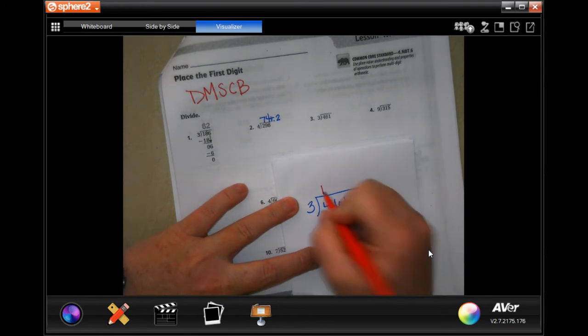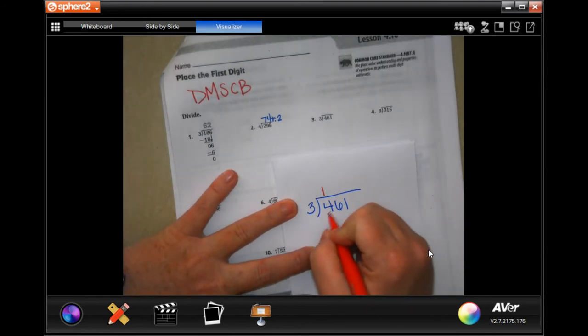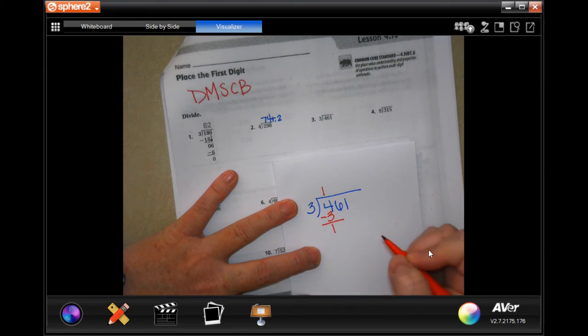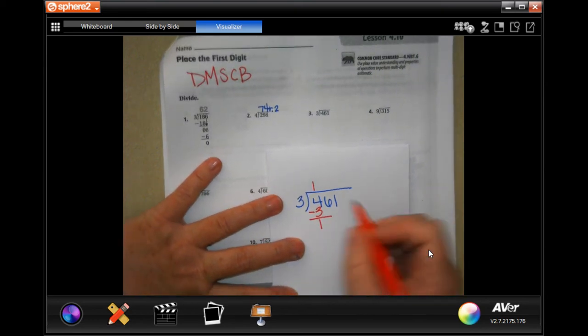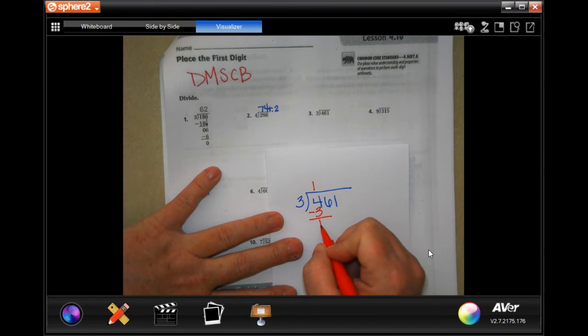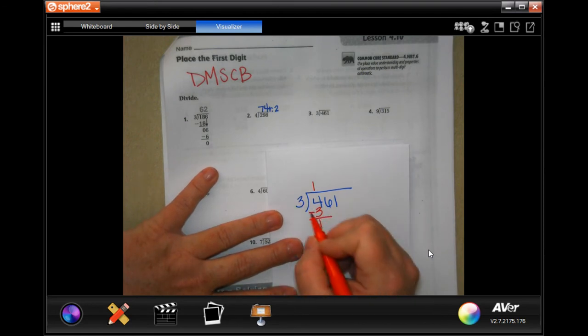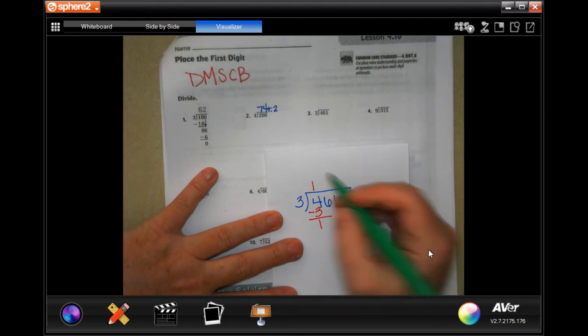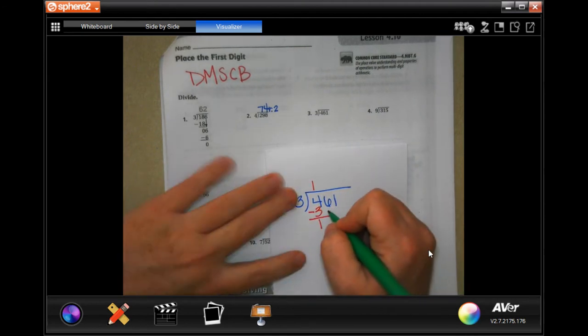3 will go into 4 one time. 1 times 3 is 3. That's my multiplication. Subtract, get 1. That's my subtraction. My checking is just checking that 1 is smaller than 3 because if it's not, then I could have put a 2 up there instead of a 1.